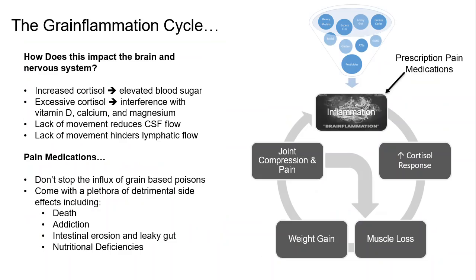If you look at the diagram on the right-hand side, you'll see a funnel with a number of different things — these are all things that grain can do or that grain contains. We're talking about heavy metals, excessive omega-6, leaky gut, excessive carbohydrates, mold and mycotoxins, gluten, ATIs (amylase trypsin inhibitors — a special protein that can cause inflammation), genetically modified organisms, GMO pesticides, and pesticides. All these things add up to an inflammatory process.